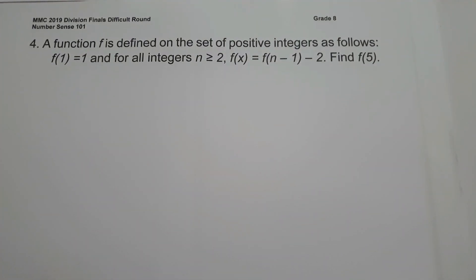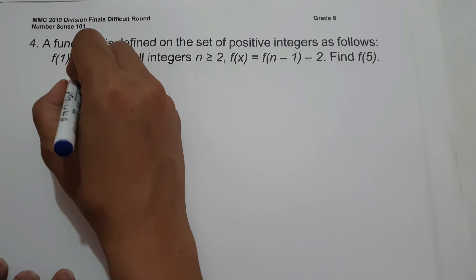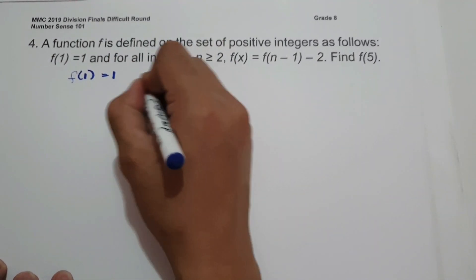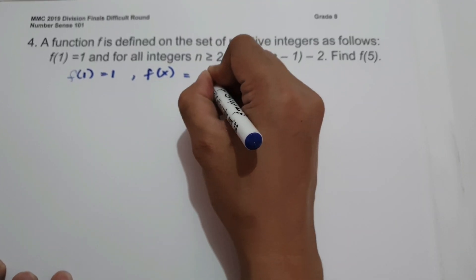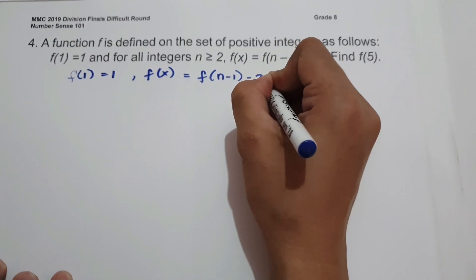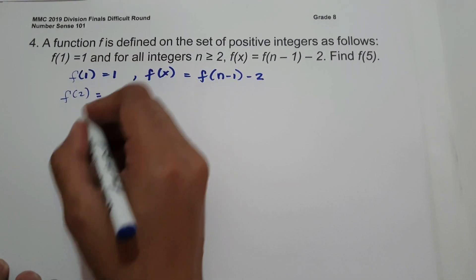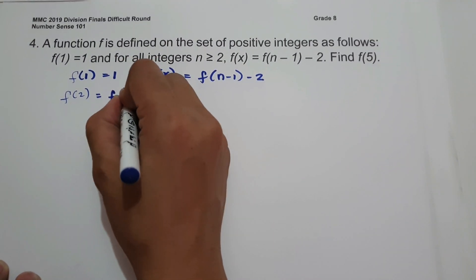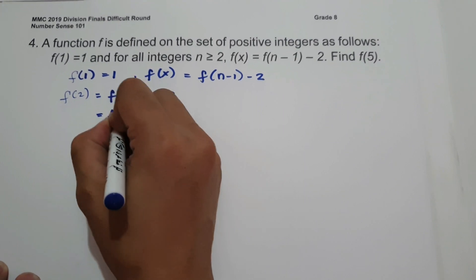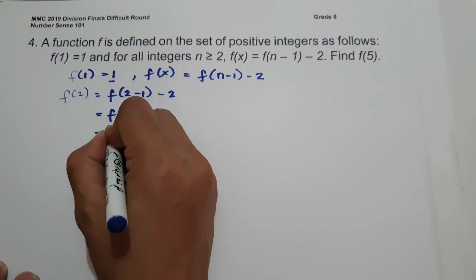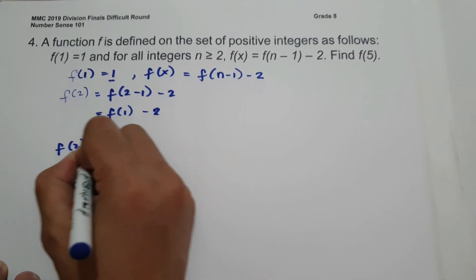On number 4, a function f is defined on the set of positive integers as follows: f(1) equals 1, and for all integers n greater than or equal to 2, f(n) equals f(n minus 1) minus 2. We are looking for f(5). So f(2) equals f(1) minus 2, which is 1 minus 2, so f(2) is negative 1.